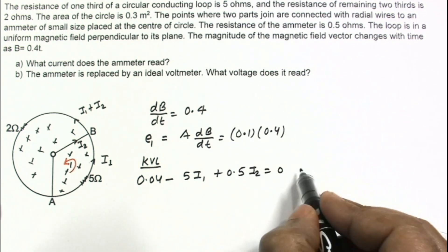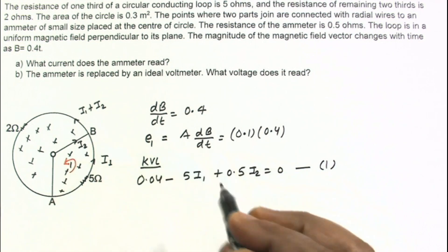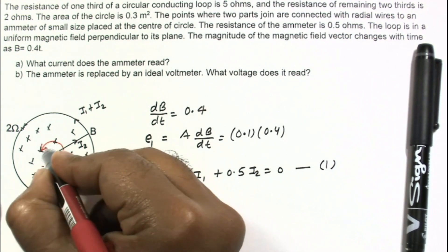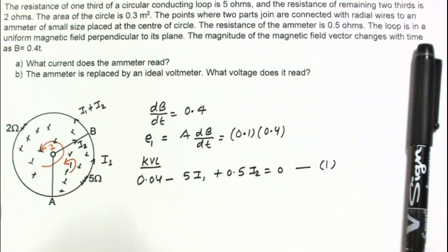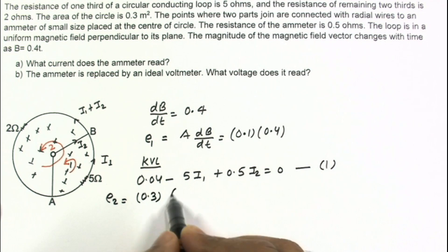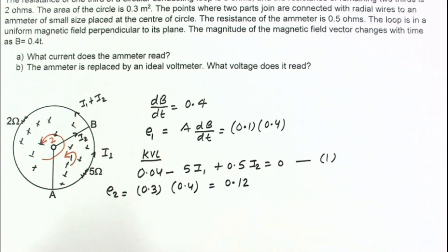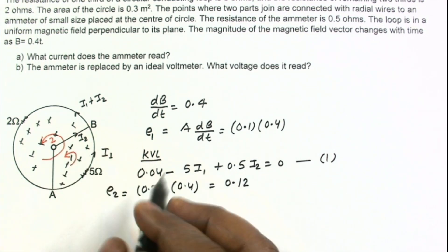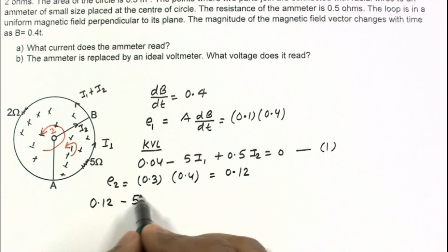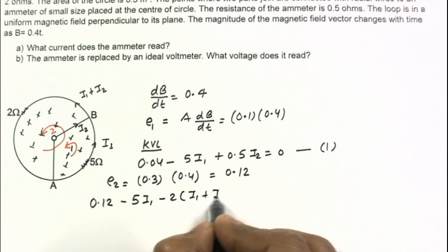Writing the second KVL equation for the larger loop: E2 equals total area 0.3 multiplied by dB/dt = 0.4, giving E2 = 0.12 V. Moving in the anti-clockwise sense, the equation is: 0.12 − 5·i1 − 2·(i1 + i2) = 0. This is equation (2).